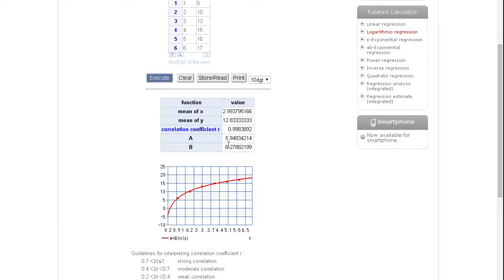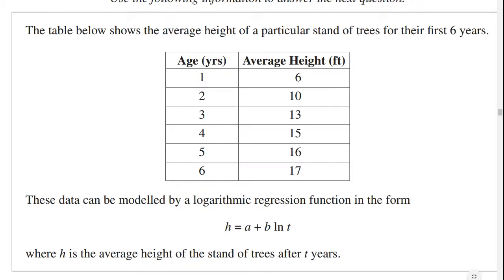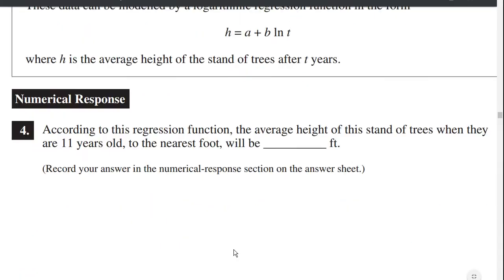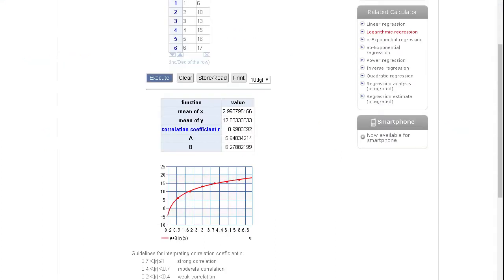A equals 5.9483424, B equals 6.2788, and you get a graph that looks like this. Using that curve, we're going to figure out, when the trees are eleven years old, we're going to use this graph and figure out, at eleven years old, what the height is.